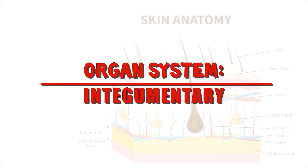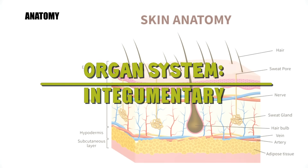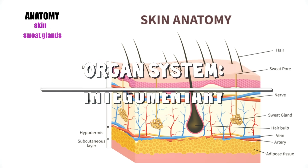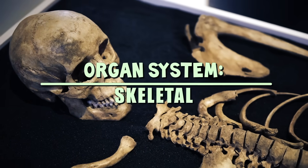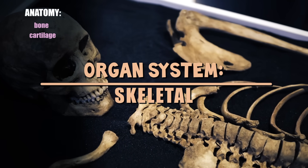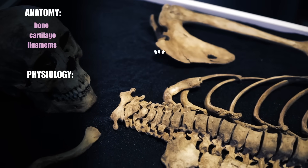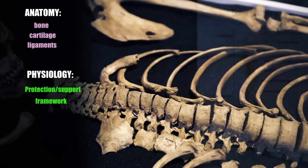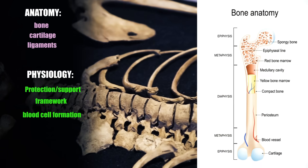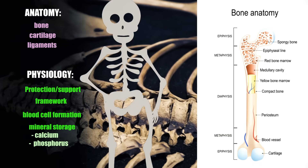Integumentary system is the external body covering composed of skin, sweat glands, oil glands, hair, and nails. The function is to protect deep tissues from injury and synthesize vitamin D from a cholesterol precursor. Skeletal system is comprised of bone, cartilage, and ligaments. The function is to protect and support body organs, provide the framework for the body, serve as the site for blood cell formation, and storage of minerals.